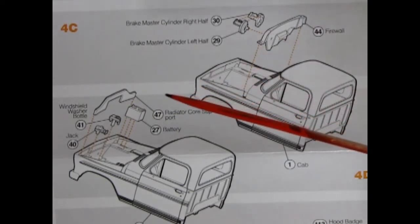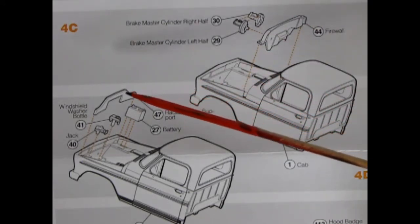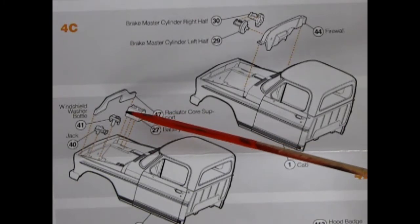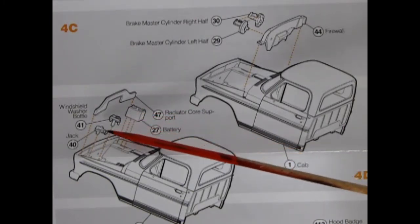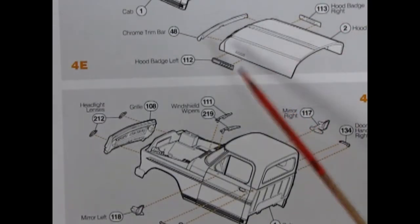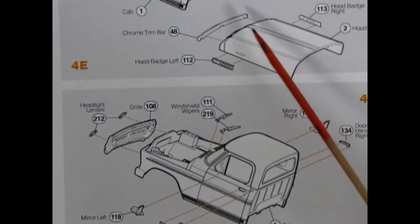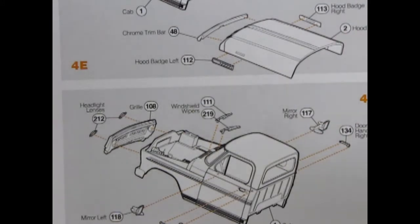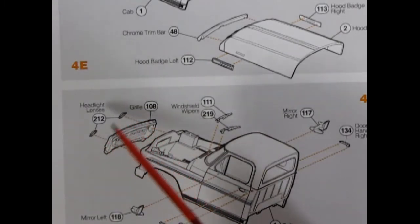Following that we can glue in our radiator support, our battery and our windshield washer bottle and our jack. For our hood we have right and left hand side hood badges as well as a chrome trim bar. Then we finalize the cab by gluing on our door handles right and left, our gas cap, our right and left rear view mirrors, windshield wipers and grill with the two headlight lenses.